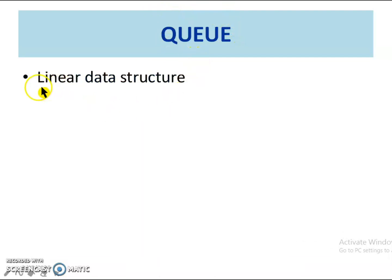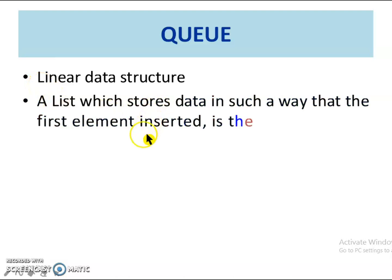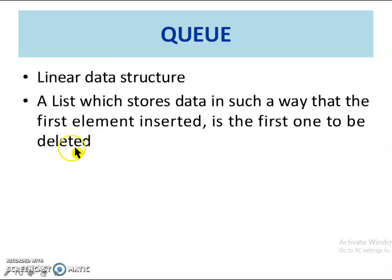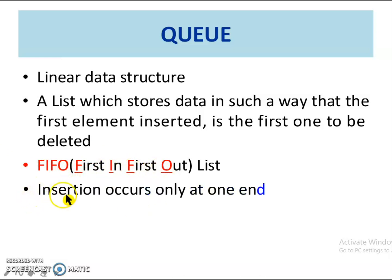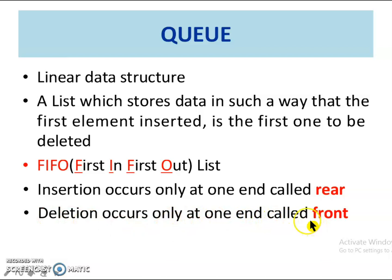Let us see what is Queue. Queue is a linear data structure which stores data in such a way that the first element inserted is the first one to be deleted. Hence, it is also called as a FIFO list. In Queue, insertion can be done at one end called the rear, and deletion can be done at one end called the front.